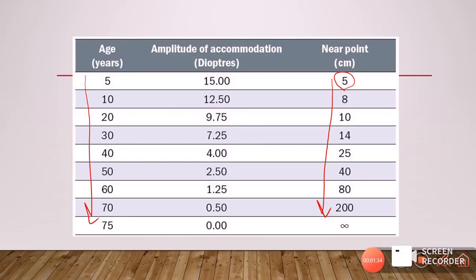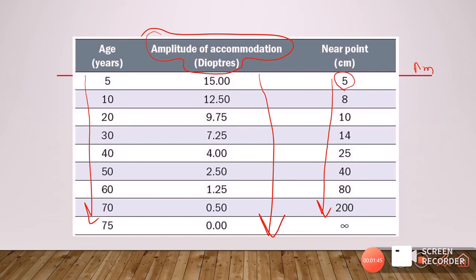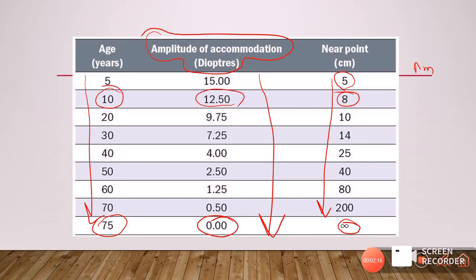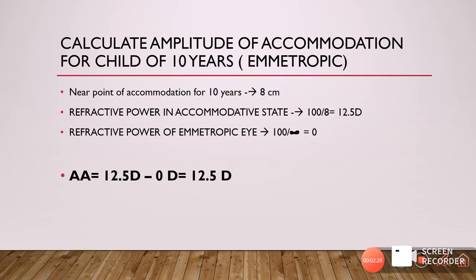From the table, the amplitude of accommodation decreases with age and therefore the near point increases or recedes. A patient who is 75 years of age has almost zero amplitude of accommodation and will definitely need correction to look at near objects. A child of about 10 years has a near point of about 8 centimeters and amplitude of accommodation of 12.5 diopters. As age increases, amplitude decreases and near point recedes.